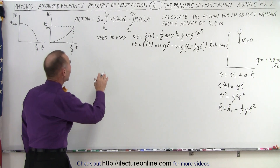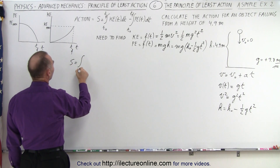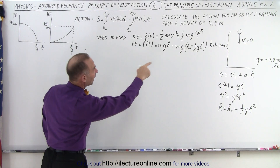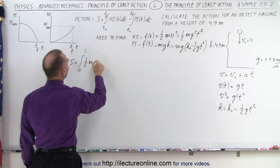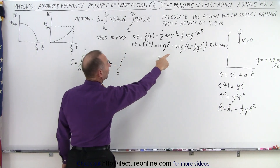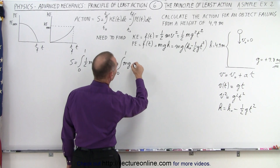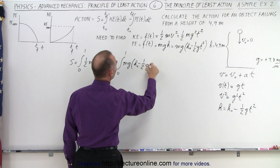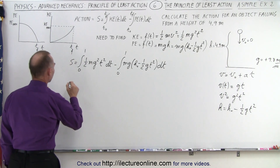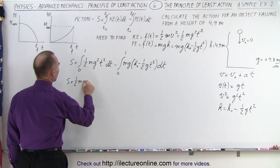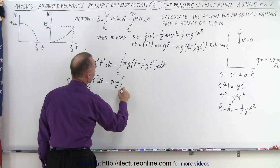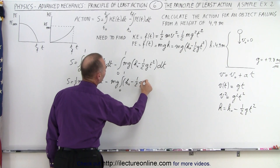Now we're ready to calculate the action. The action equals the integral from zero to one — because it takes exactly one second for the object to hit the ground — of the kinetic energy, which is one half m g squared t squared dt, minus the integral from zero to one of the potential energy, which is mg times the quantity h-naught minus one half g t squared, times dt. Pulling constants out of the integrals, we get s equals one half mg times the integral from zero to one of t squared dt, minus mg times the integral from zero to one of h-naught minus one half g t squared dt.